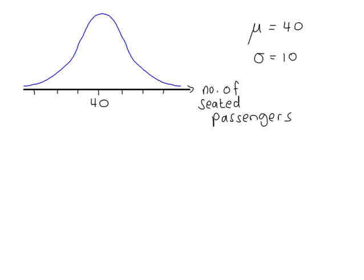In this example, we look at the number of seated passengers in a coach, and we're trying to see if a normal distribution would be a suitable model. So, you have 40 for the mean. If you've got three standard deviations on each side, so 40, 50, 60, 70.